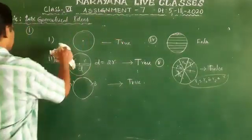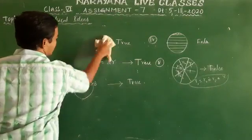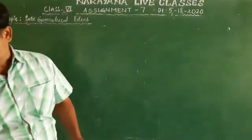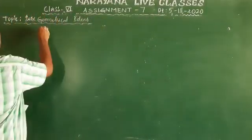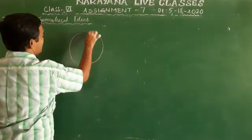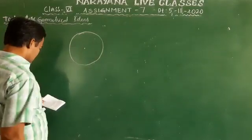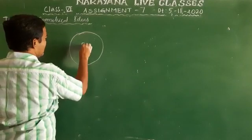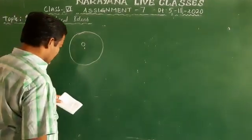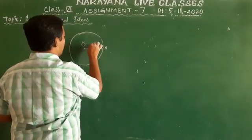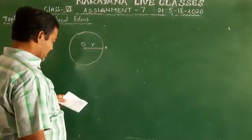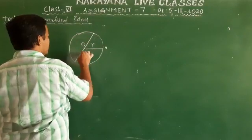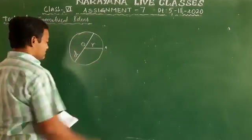Now the second question: draw a circle and mark its centre. O is the centre. And take R as the radius — R is the radius. Next, the diameter: the diameter is drawn through the centre, and the diameter equals two times the radius.